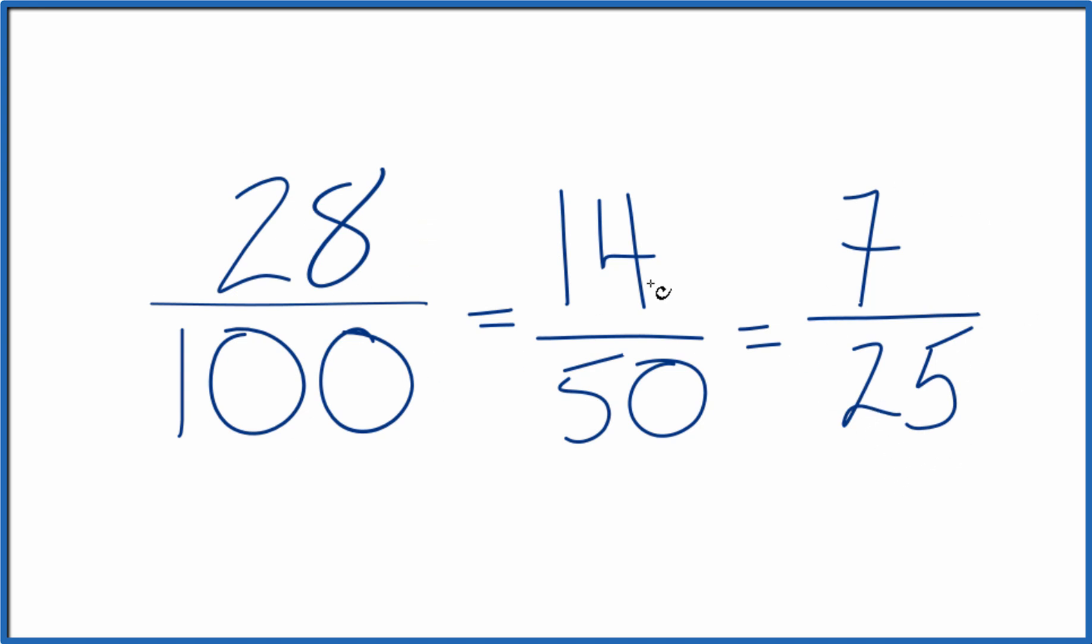These are all equivalent fractions. If you divide 28 by 100, 14 by 50, or 7 by 25, you get the same decimal answer. It's just that 7 25ths, that is the lowest terms. This is Dr. B. Thanks for watching.